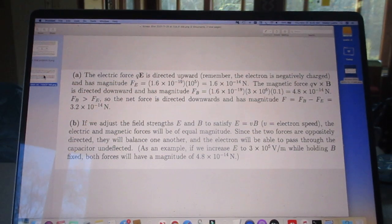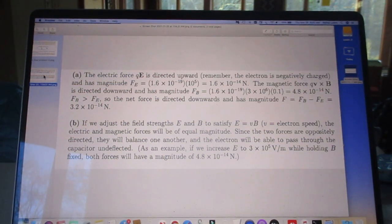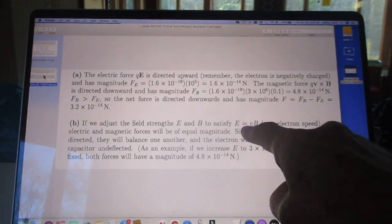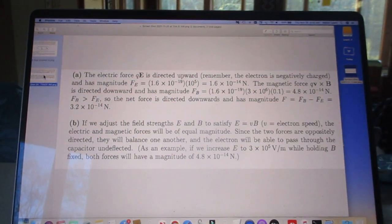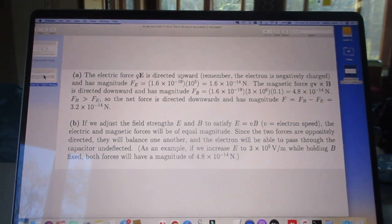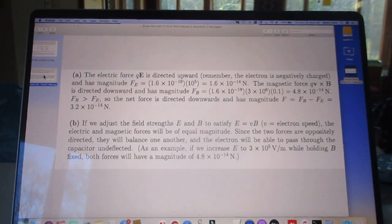Now, if we adjust the field strengths E and B to satisfy that E, the magnitude of E, is the magnitude of VB, then the electron can go through without any deflection. Undeflected. There are many ways that you can do that. I mention here only one way.